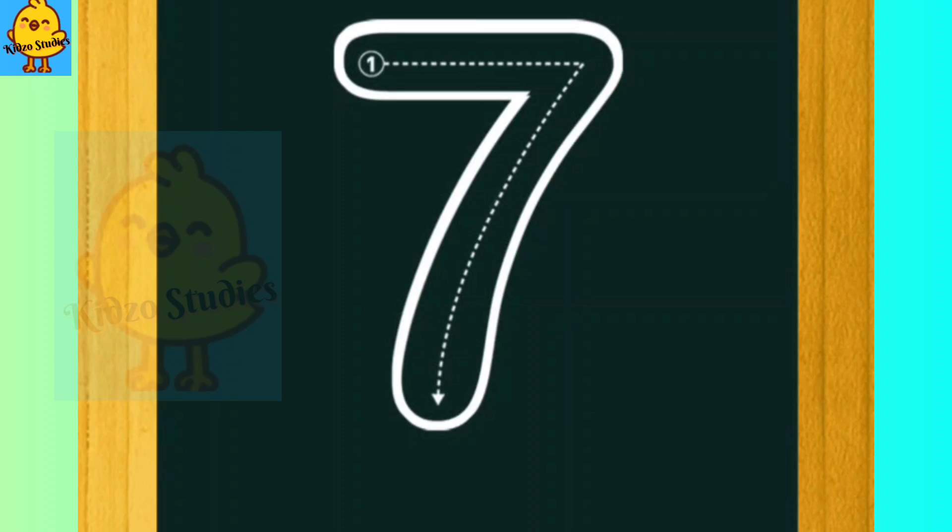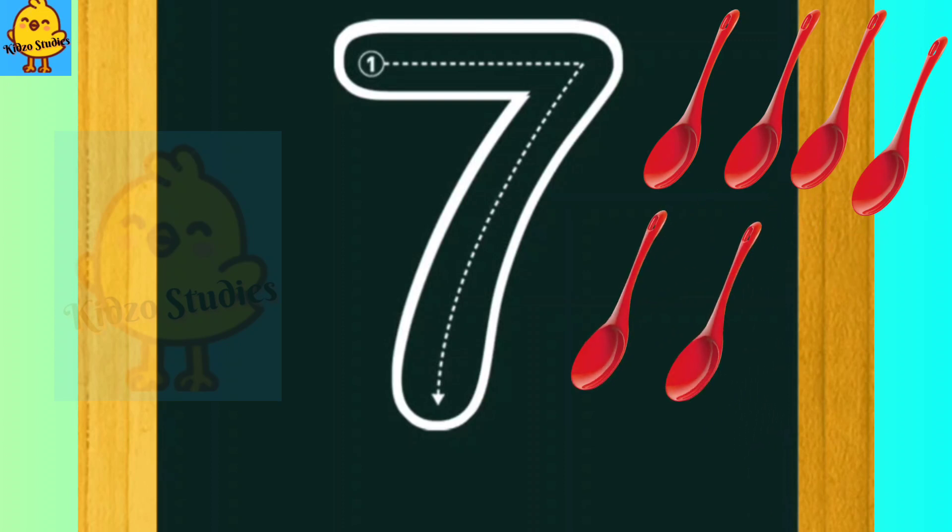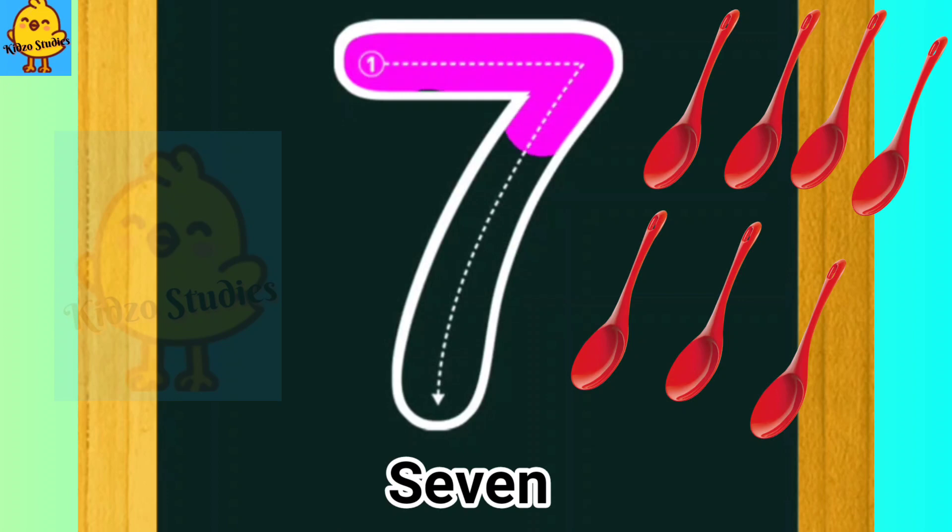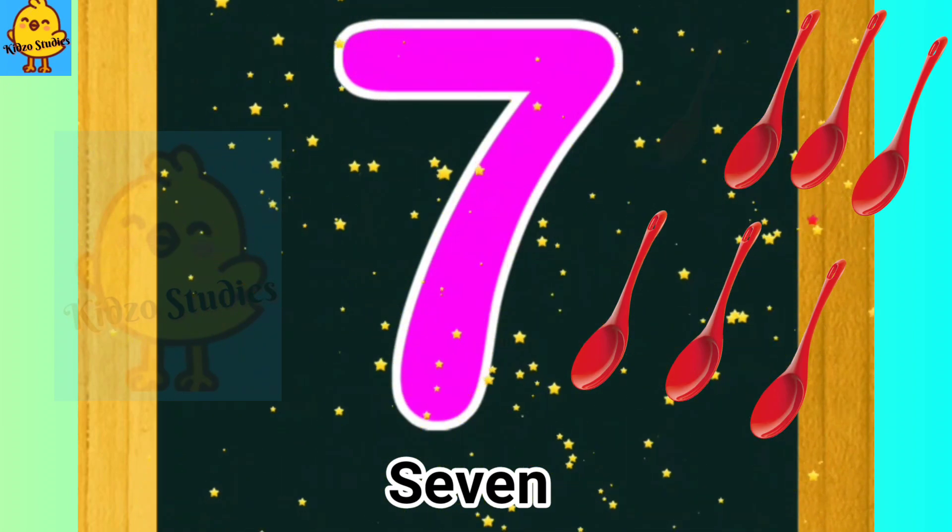7, 1, 2, 3, 4, 5, 6, 7. 7 spoons. S, E, V, E, N, 7.